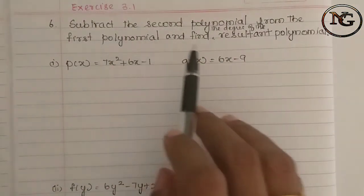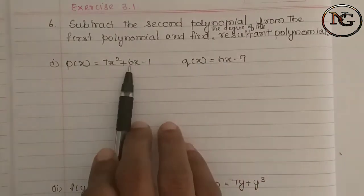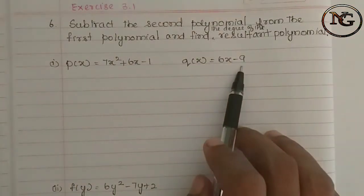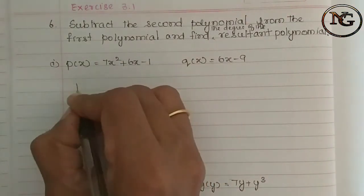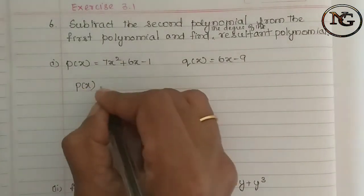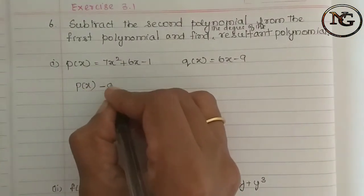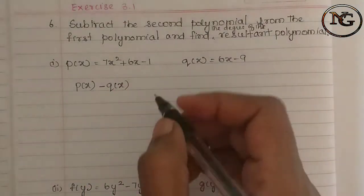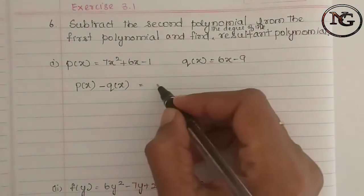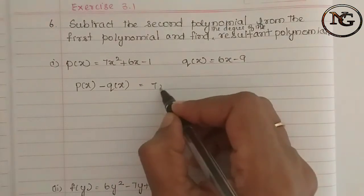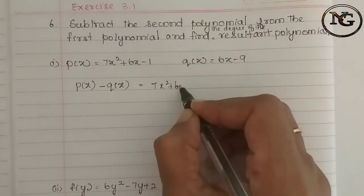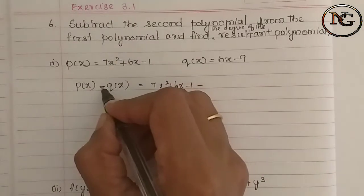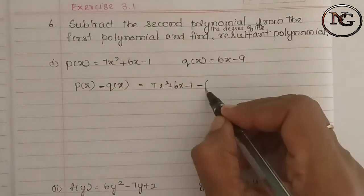Subtract the second polynomial from the first polynomial. The first polynomial is p of x. The second polynomial is minus q of x. So p of x is 7x squared plus 6x minus 1. If you have minus, you apply a minus to the second polynomial.